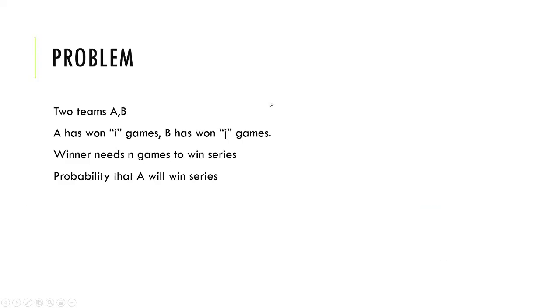The problem statement is that we have two teams A and B. A has won i games, B has won j games, and the winner needs n games to win the series. We want to find the probability that A will win the series.